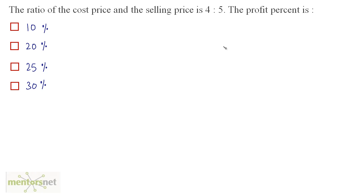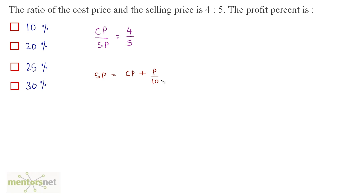The ratio of cost price to selling price is 4:5. We need to find the profit percent. We know that selling price equals cost price plus profit percentage of cost price, so SP equals CP times (1 plus P/100). Therefore SP/CP equals (100 plus P)/100.